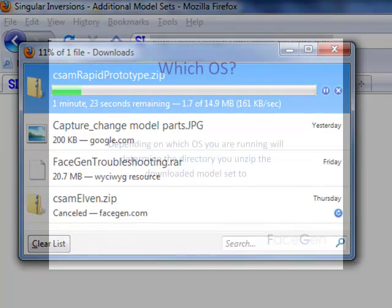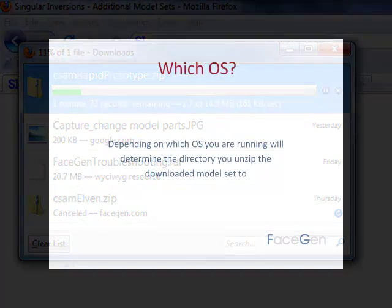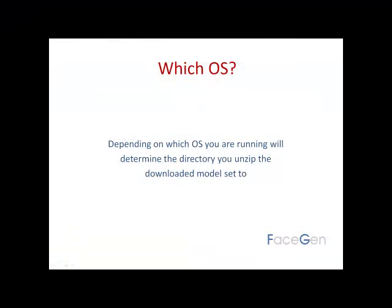Once the file has completely downloaded, unzip it to your FaceGen Model Sets directory. Now, depending on which Windows OS you are running, this file location will be somewhat different.